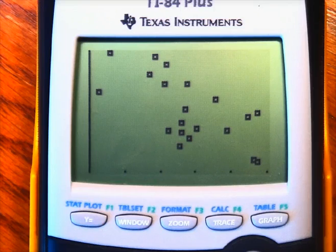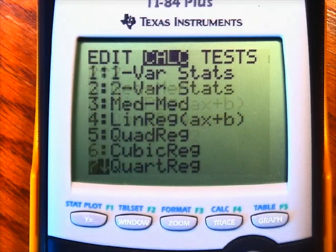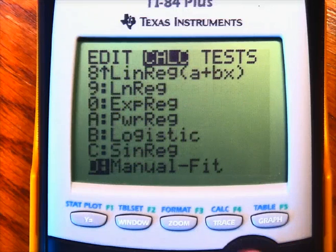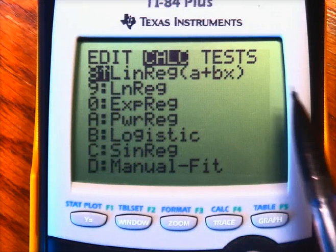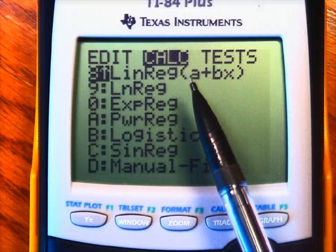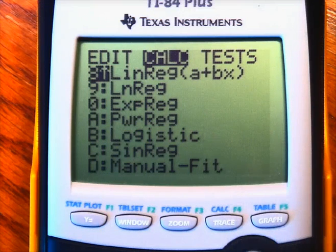So to actually run the linear regression, if I hit the stat command, I'll go to calculate. So I'm going to go ahead and use this option. You could use either of the linear regression options, but this option matches the study guide, so your constant is being called A and the slope is being called B.